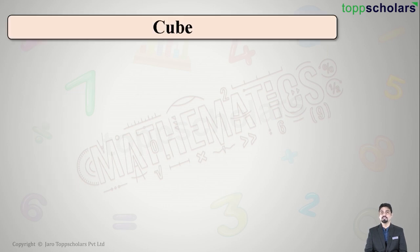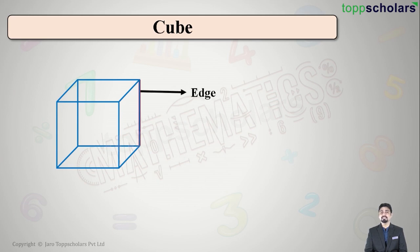So let us start with cube. How does a cube look students? Like this. What does a cube have? It has an edge, it has edges like this. It has faces like this and it has corners like this.